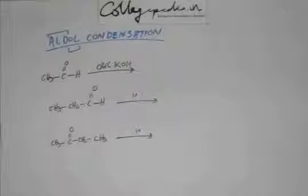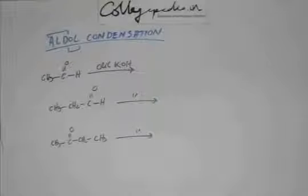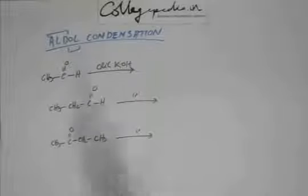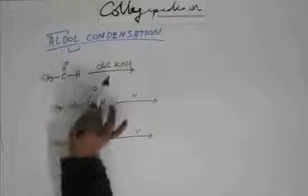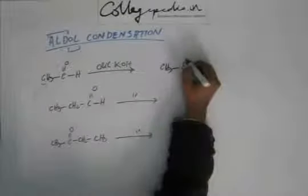For these three cases, practice writing the mechanism of aldol condensation and reaching the final product all by yourself. Try to find out the product — I'll give you the answers anyway, but try to solve it on your own and then match. I'm not going to show the mechanism; I'll write the product directly. The reaction will start like this: the base is going to abstract a hydrogen from this carbon, so this carbon develops a negative charge, and that carbon is going to attack another ethanal which has not reacted yet.